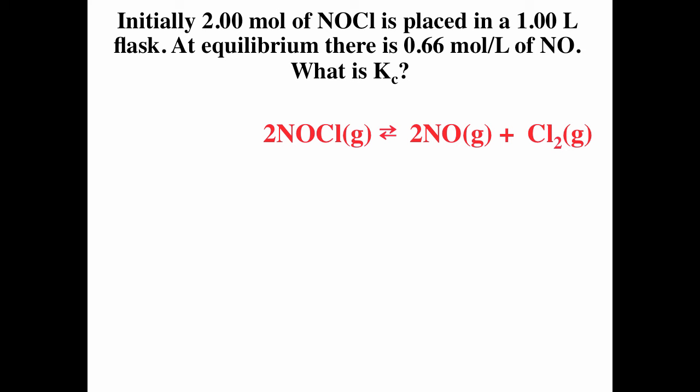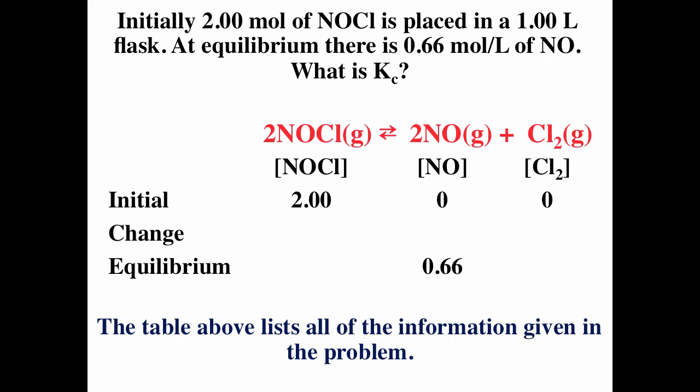A more complex equilibrium: 2 NOCl going to 2 NO plus Cl₂. We're told that initially we have 2 moles of NOCl placed in a 1-liter flask, and at equilibrium there's 0.66 moles per liter of NO. What is Kc? We make a table — initial, change, equilibrium. Initially we have 2 molar NOCl, 0 NO, and 0 Cl₂.